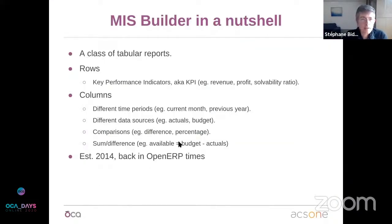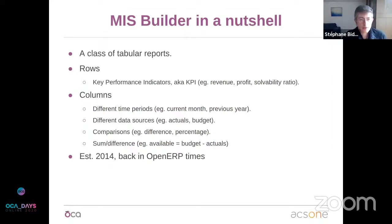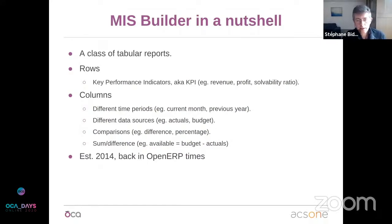I'll start with a short reminder of what MIS Builder is. Basically it's a tool to create a specific class of tabular reports where in rows you have what we call key performance indicators or KPIs, which can be revenue, profit, some ratio, or anything you can think of. It's made to be very efficient to query on accounting data, but there are features to query basically any Odoo model. In columns, you can put the same KPIs across different time periods, for instance the current month or previous year.